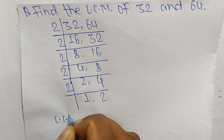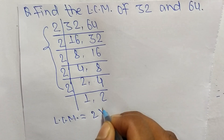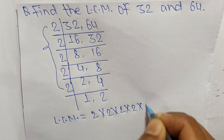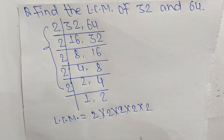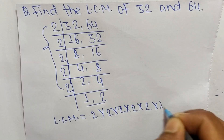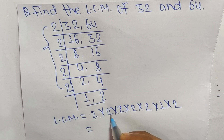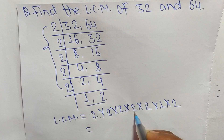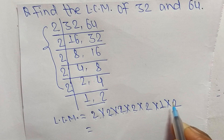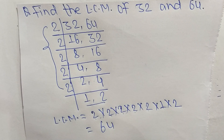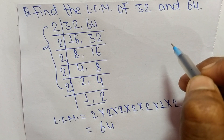So the LCM is equal to 2 times 2 times 2 times 2 times 2 — that is 5 twos from one part — times 1 times 2 from the other part. So: 2 times 2 is 4, times 2 is 8, times 2 is 16, times 2 is 32, times 1 is 32, times 2 is 64. So 64 is the LCM of 32 and 64.